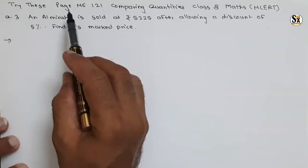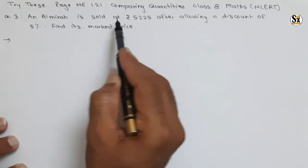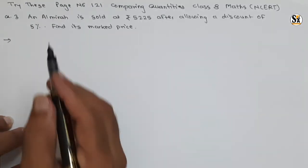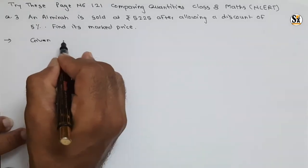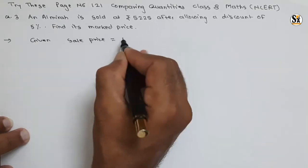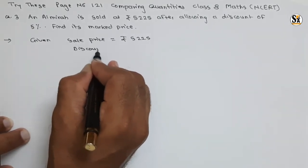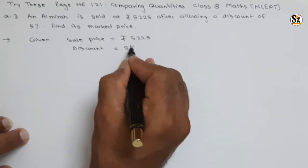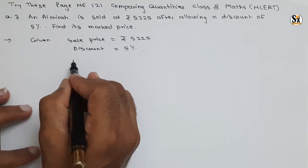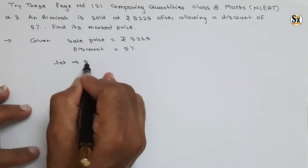Question number 3 under 'Try This' section, page 121, comparing quantities Class 8 Mathematics. An almirah is sold at rupees 5,225 after allowing a discount of 5%. Find the mark price. Given: sale price equals rupees 5,225 and discount equals 5%. Remember, discount is always on mark price. Let mark price equal x.